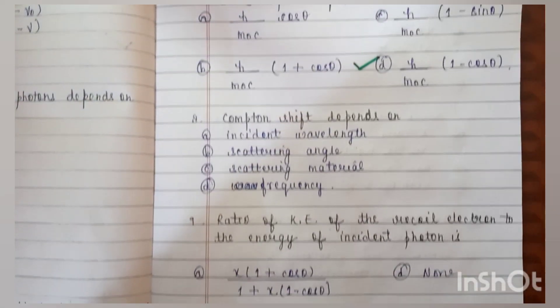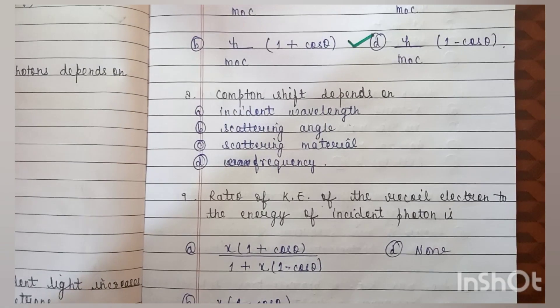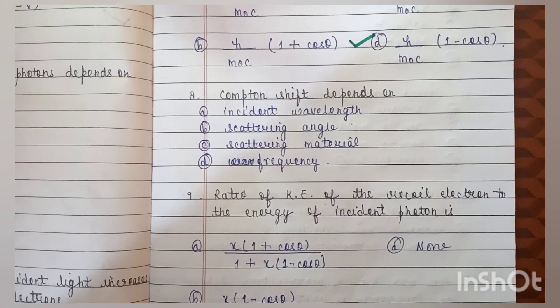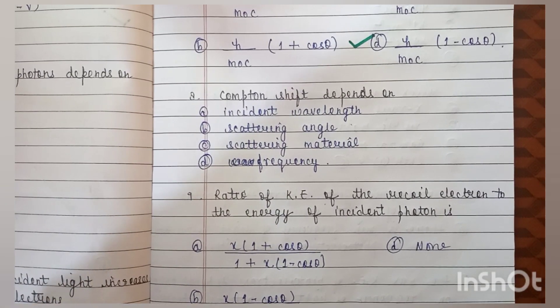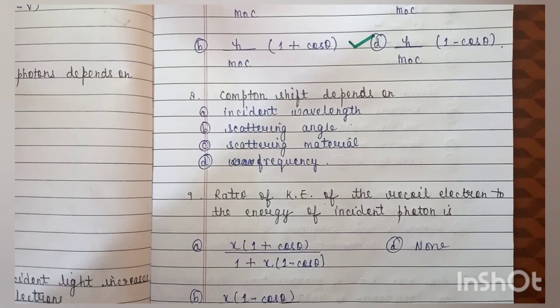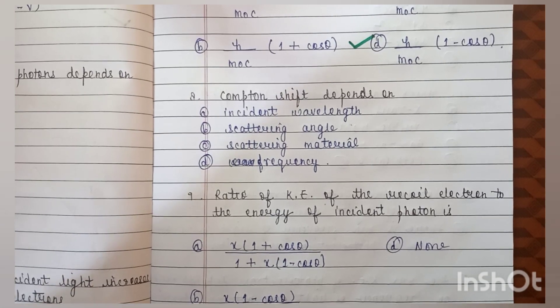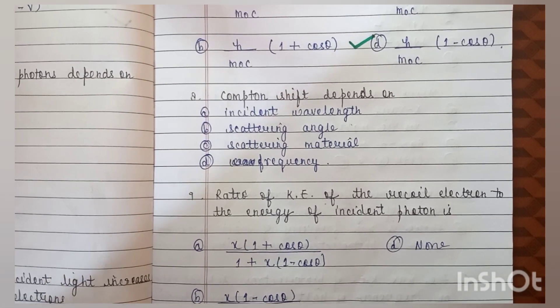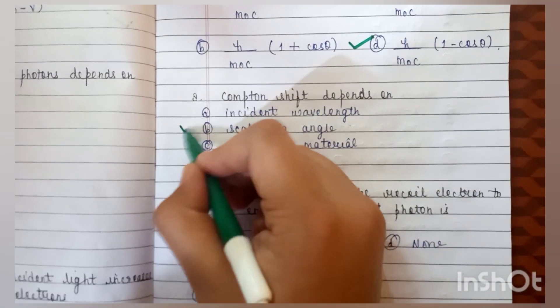Question number 8: Compton shift depends on — incident wavelength, scattering angle, scattering material, or frequency? The correct answer is B: scattering angle.